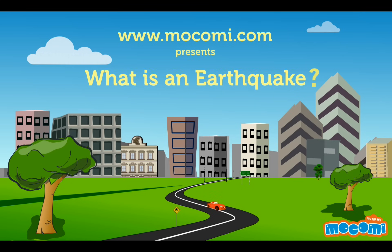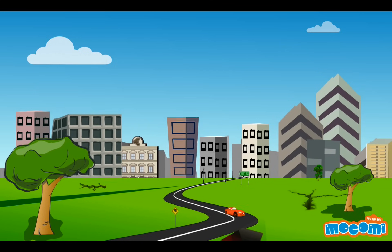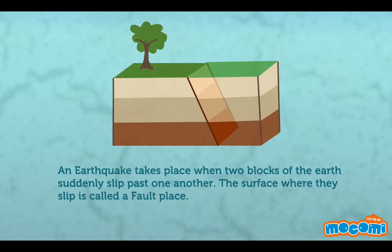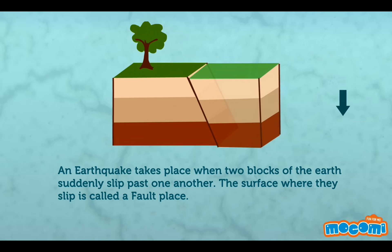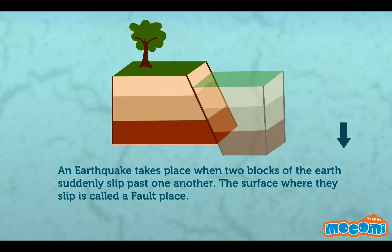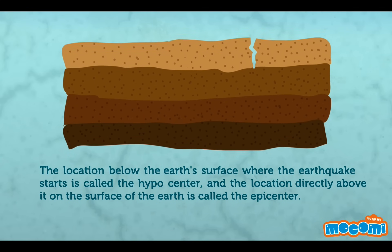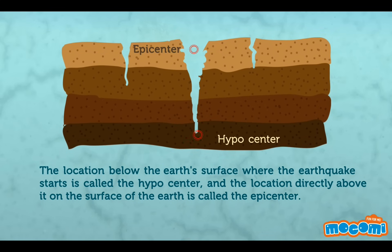What is an earthquake? An earthquake takes place when two blocks of the earth suddenly slip past one another. The surface where the slip occurs is called a fault plane. The location below the earth's surface where the earthquake starts is called the hypocenter, and the location directly above it on the surface of the earth is called the epicenter.